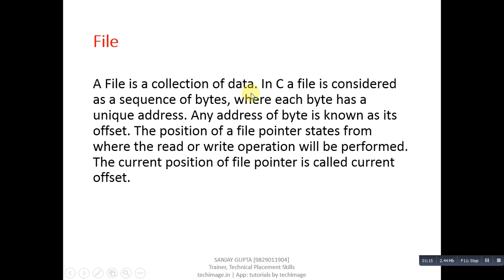File: a file is a collection of data. In C, a file is considered as a sequence of bytes where each byte has a unique address. The address of a byte is known as its offset. The position of a file pointer states from where the read or write operations will be performed. The current position of the file pointer is called current offset.